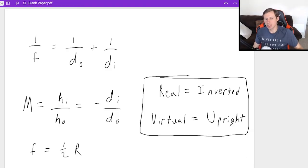The last equation we have is F equals one half R, where R is the radius of curvature. Sometimes they give you the radius of curvature. To find the focal length you just divide it by two.